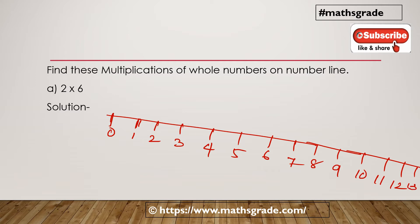2 multiplied by 6. 0 to 2, starting from 0, move 2 units from 0. That is 0 to 2, 2 units. Then 2 multiplied by 6, we have to multiply 2, 6 times. So 0 to 2.